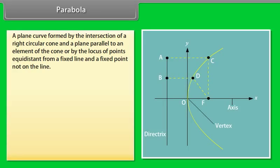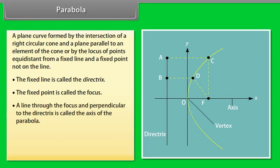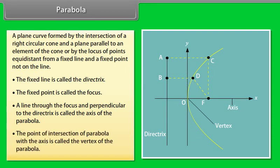Parabola. A plane curve formed by the intersection of a right circular cone and a plane parallel to an element of the cone, or by the locus of points equidistant from a fixed line and a fixed point not on the line. The fixed line is called the directrix. The fixed point is called the focus. A line through the focus and perpendicular to the directrix is called the axis of the parabola. The point of intersection of the parabola with the axis is called the vertex of the parabola.